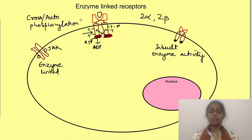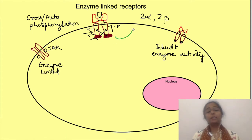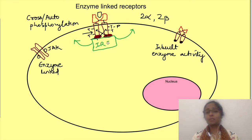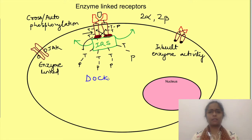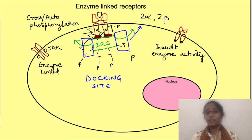This phosphorylated receptor now becomes capable of binding to other substances which can be phosphorylated, but it does not directly activate the signal transducing pathways. Instead it binds to an adapter protein which couples or links the receptor to further signaling pathways. In this case that adapter protein is insulin receptor substrate (IRS). These IRS proteins also have many tyrosine residues which are phosphorylated by the tyrosine kinase of the receptor, making IRS a high affinity docking site for other kinases and adapter proteins, bringing them closer to the cell membrane.